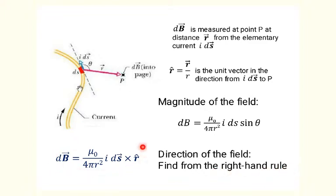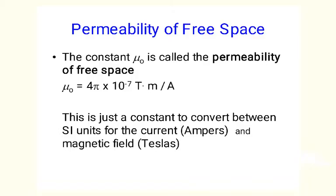Therefore, the total formula takes the expression on the left. Finally, mu_0 is the unit conversion constant that depends on the chosen system of units. It is similar to the constant epsilon_0 introduced in the discussion of electricity. The constant mu_0 is called the permeability of free space. In the SI system of units, mu_0 is equal to 4 pi times 10 to the negative 7 tesla times meter divided by amperes. This is a constant to convert between convenient units measuring current in amperes and magnetic fields in teslas.